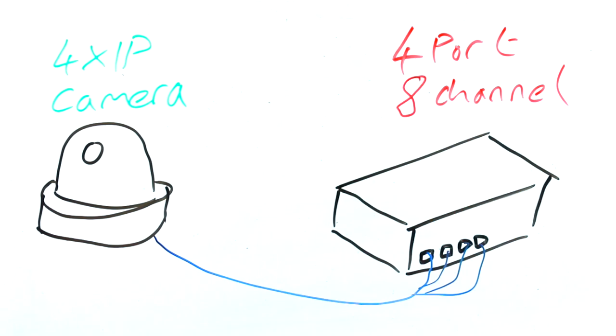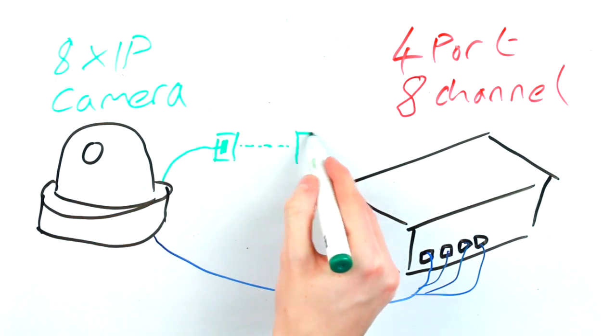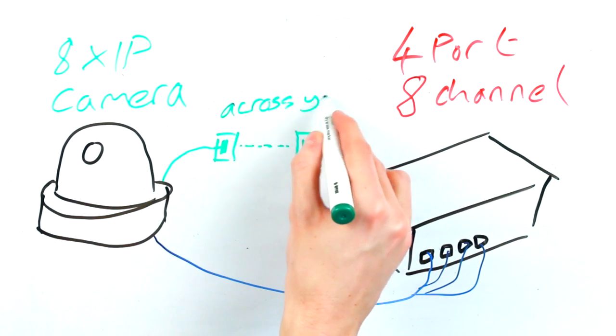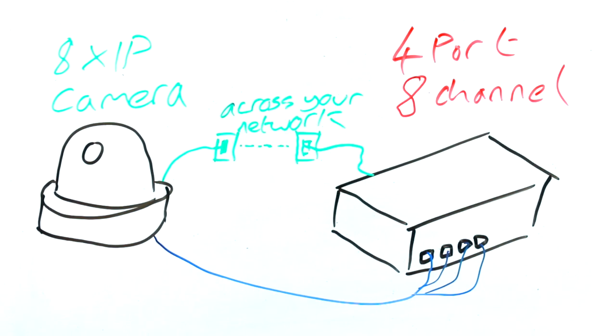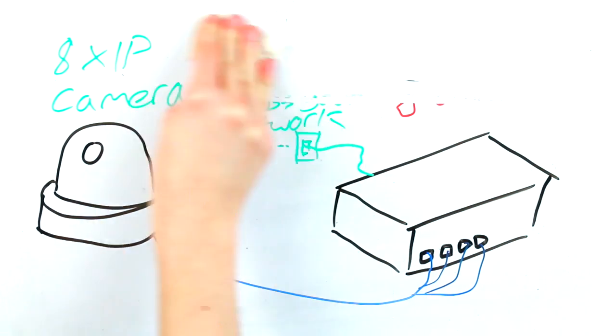It's important to know that the number of channels does not always correspond with the number of physical ports on the NVR. There can sometimes be more channels. To use these other channels, you will need to connect your cameras somewhere else on the same network as the NVR and power them using a separate PoE switch.